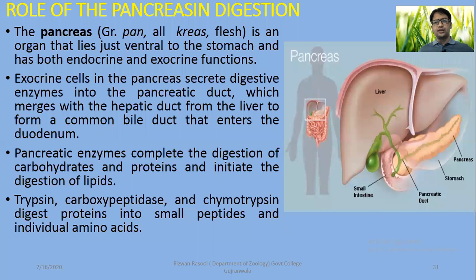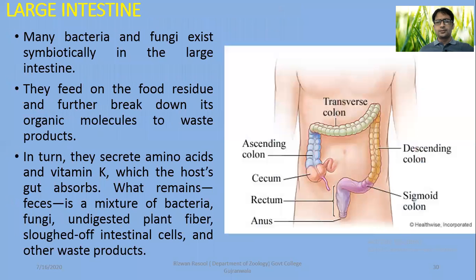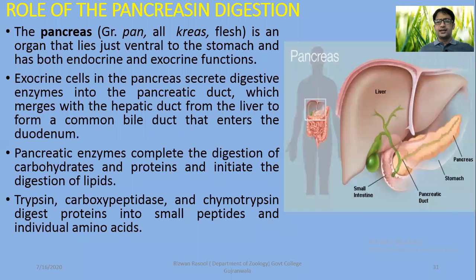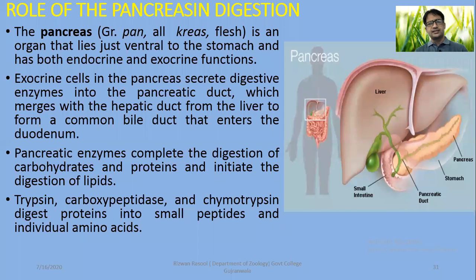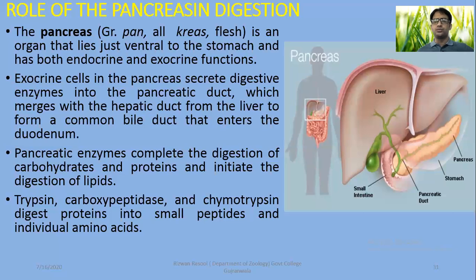Associated glands include salivary glands, pancreatic glands, and the role of the liver in the secretion of bile. We will discuss salivary glands, and the remaining portion covers the role of the pancreas as well as the gallbladder, which stores the secretion from the liver.